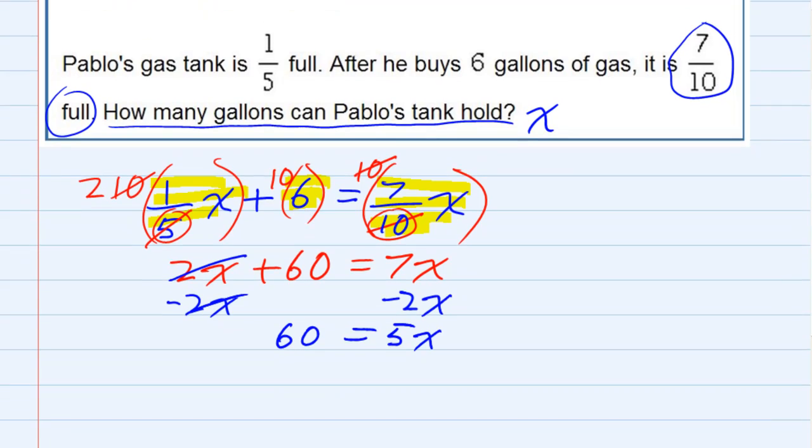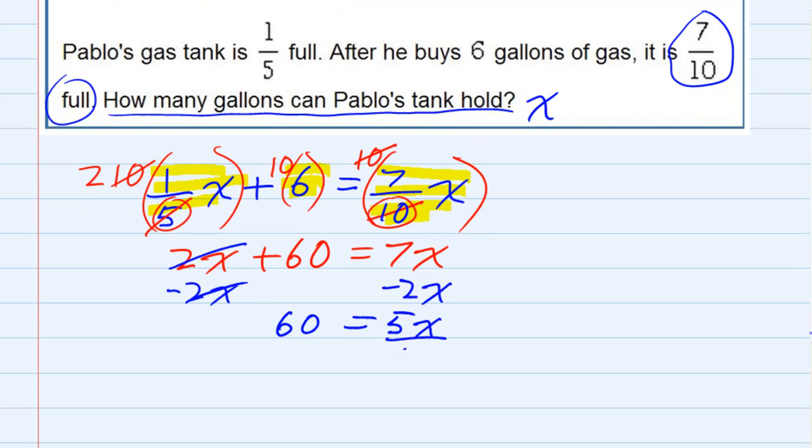I can divide both sides by five and the fives will cancel, so I'm left with x equals 12. It looks like Pablo's tank size is 12 gallons.